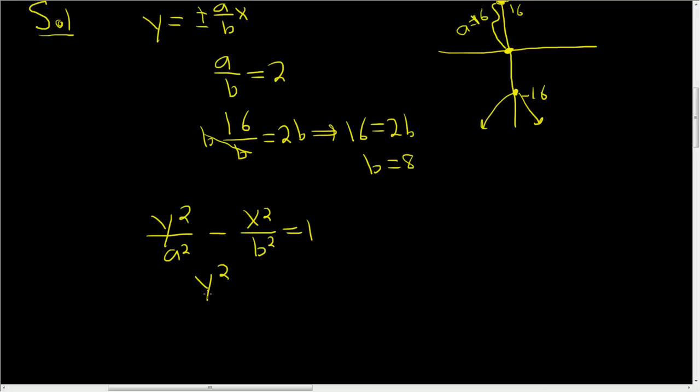So you get y squared over 256, right? Because 16 squared is equal to 256. Yup. Minus x squared over b squared, so 64. And that's equal to 1. So that's it.